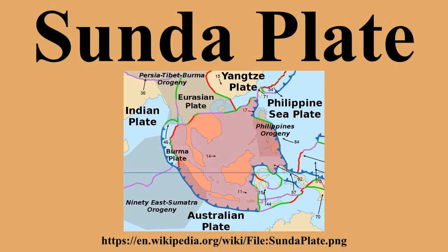The Indo-Australian Plate dips beneath the Sundar Plate along the Sundar Trench, which generates frequent earthquakes. The eastern, southern, and western boundaries of the Sundar Plate are tectonically complex and seismically active. Only the northern boundary is relatively quiescent.